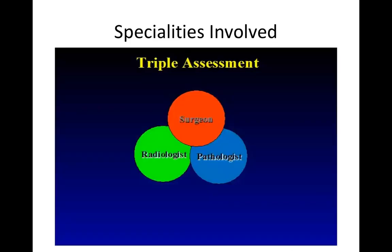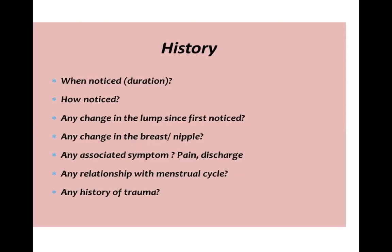There are different specialties involved in the triple assessment. Most of the time, the patient initially presents to a surgeon, who refers her to a radiologist and then a pathologist. In history, you will ask the patient when the lump was first noticed, how the patient noticed it — whether it was an incidental finding on a routine ultrasound or the patient herself noticed it — any change in the lump size, any change in the breast or nipple, and any associated symptoms like pain and discharge from the nipple, or any history of trauma.